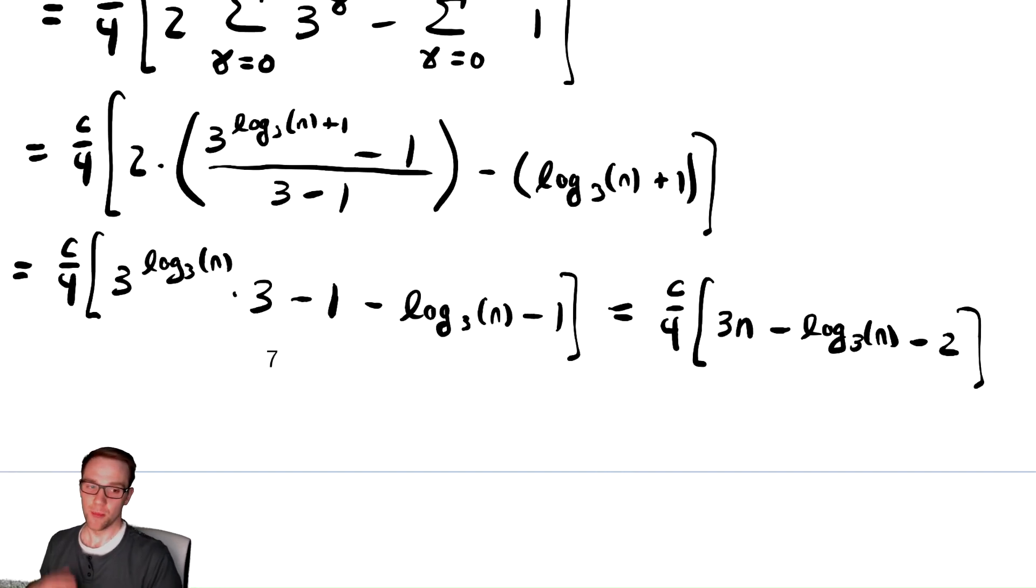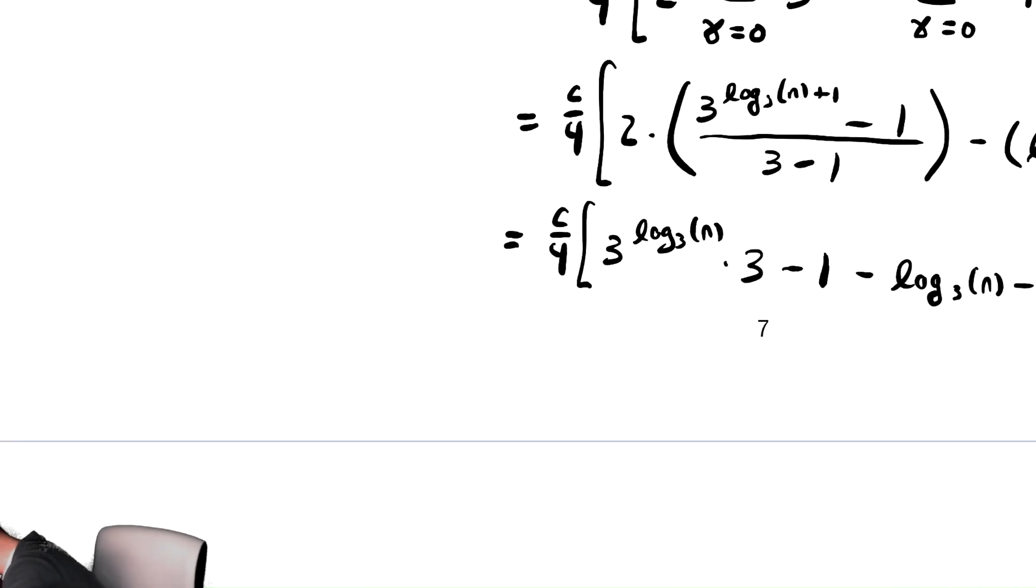Which may look really messy, but it's a closed form expression. I didn't do any bounding here, so I can just identify the complexity from this. So my final conclusion is that t of n is once again in theta of n. So that's my final complexity that I have.